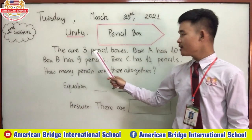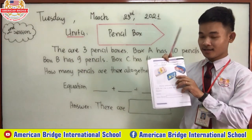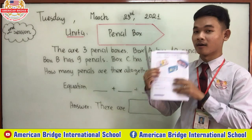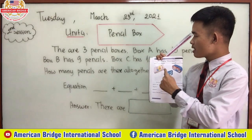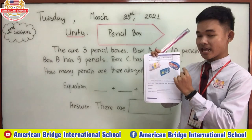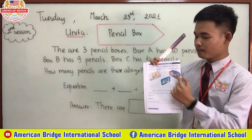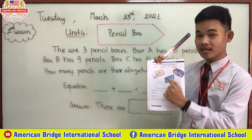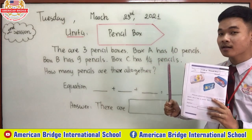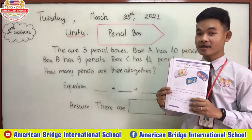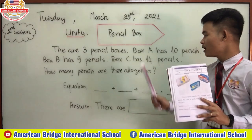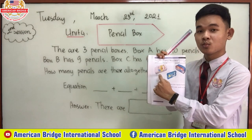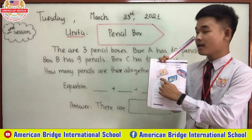There are three pencil boxes. You can see box A, box B, and box C. Now let's read more and find out how many pencils are in those boxes. Box A has 10 pencils.